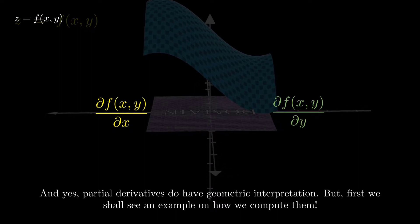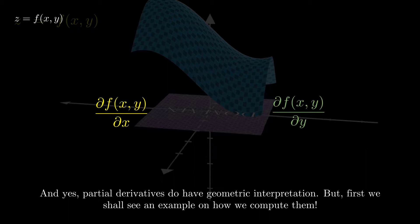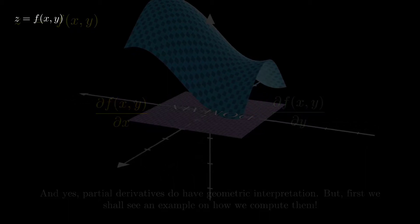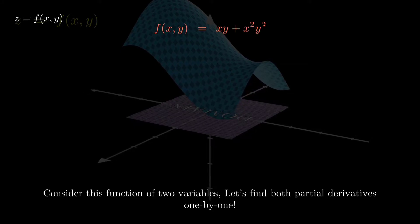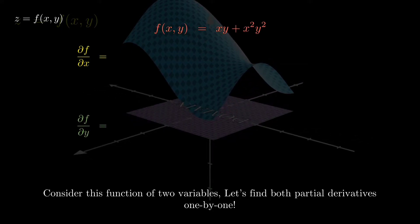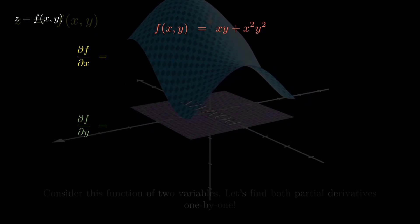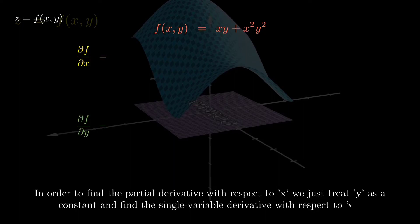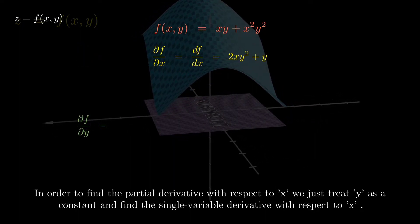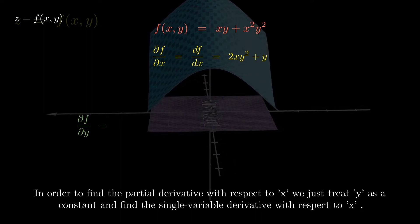Partial derivatives do have a geometric interpretation, but first let's see an example of how we compute them. Consider a function of two variables — to find the partial derivative with respect to x, we just treat y as a constant and find the single variable derivative with respect to x.